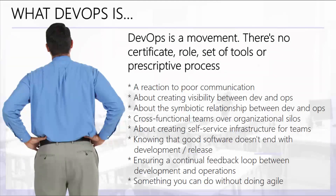So what is DevOps? Briefly, DevOps is really a framework or a movement, as many people like to call it. There's no certificate, role, set of tools, or prescribed process. It's a framework that combines dev and operations into one coherent department. It came about as a reaction to poor communication among developers, operation teams, and teams spread across multiple locations.